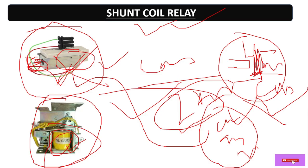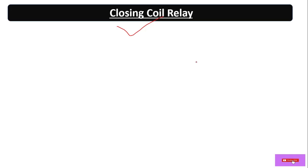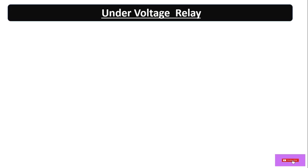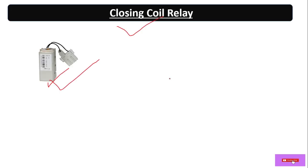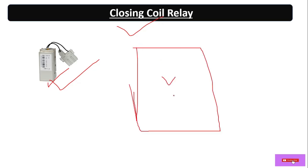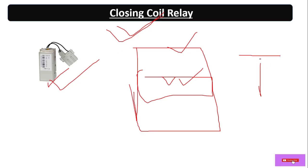We can also manually give the trip command through the TNC switch — Trip, Neutral, and Close. The closing coil looks similar to the shunt coil but has a plunger inside. When a fault is cleared and we want to switch the breaker back on, the closing coil helps to close or make the circuit, and it can also be operated manually through the TNC switch.